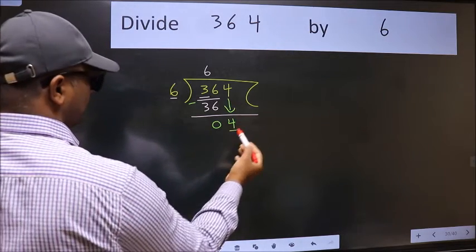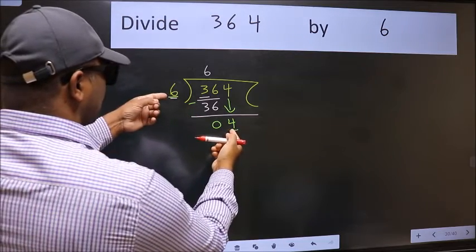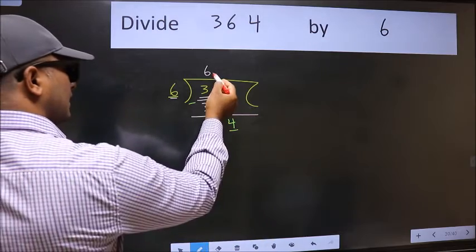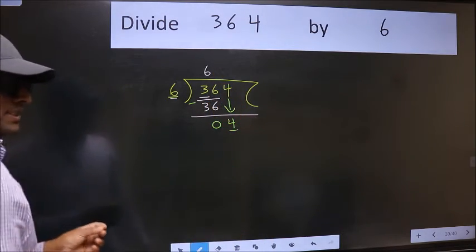The mistake is this: here we have 4 and here 6. 4 is smaller than 6, so what many do is they directly put a dot and take 0.